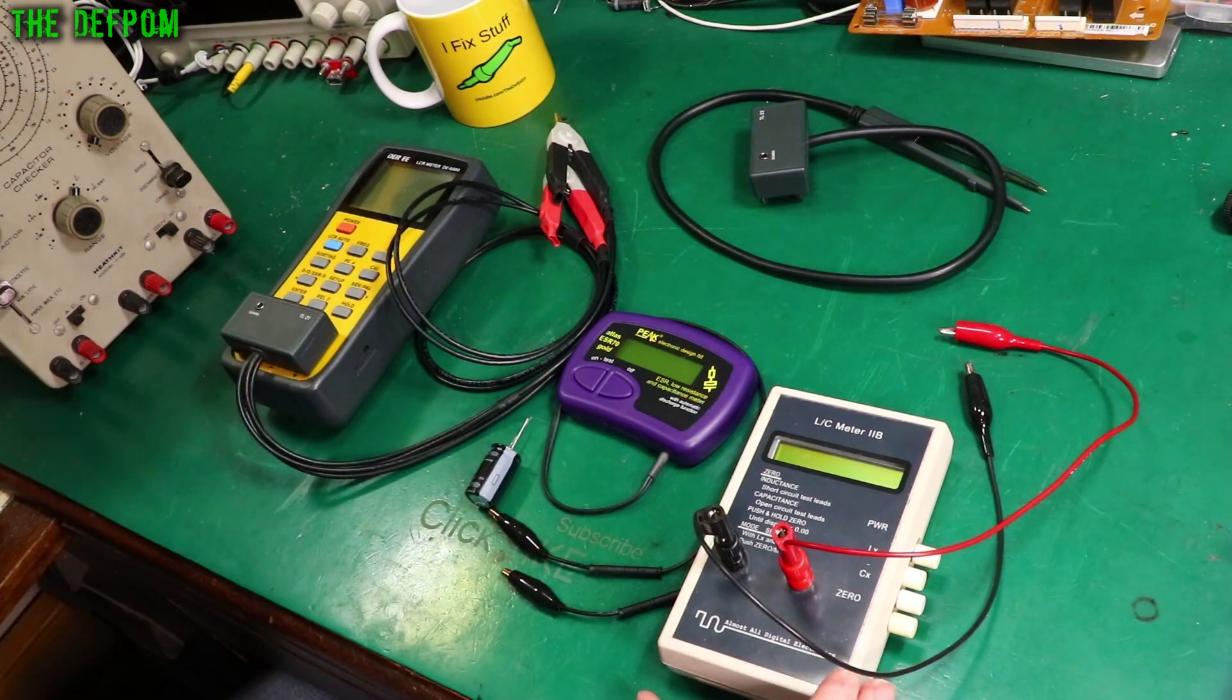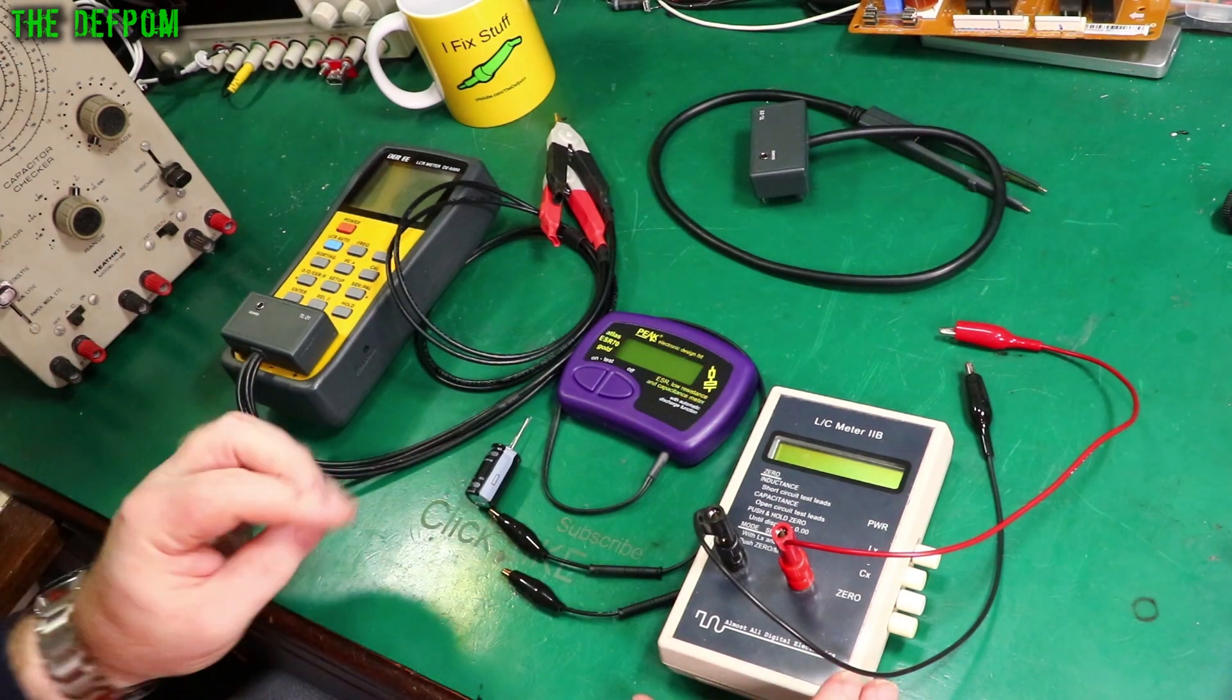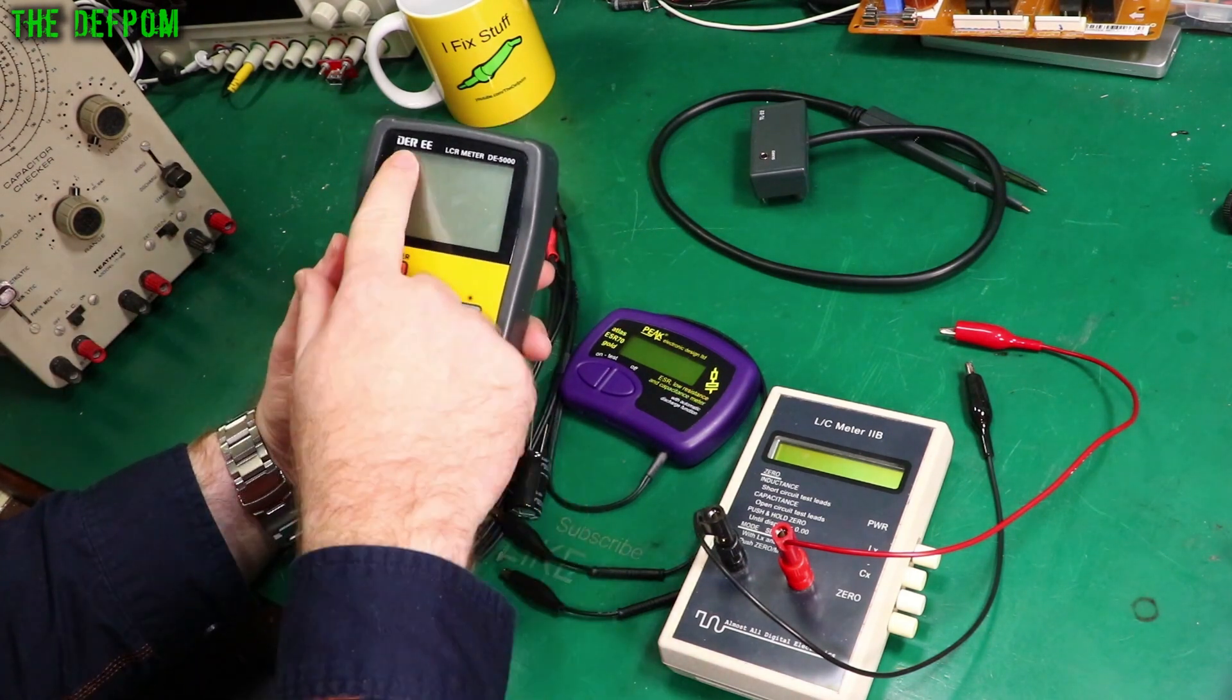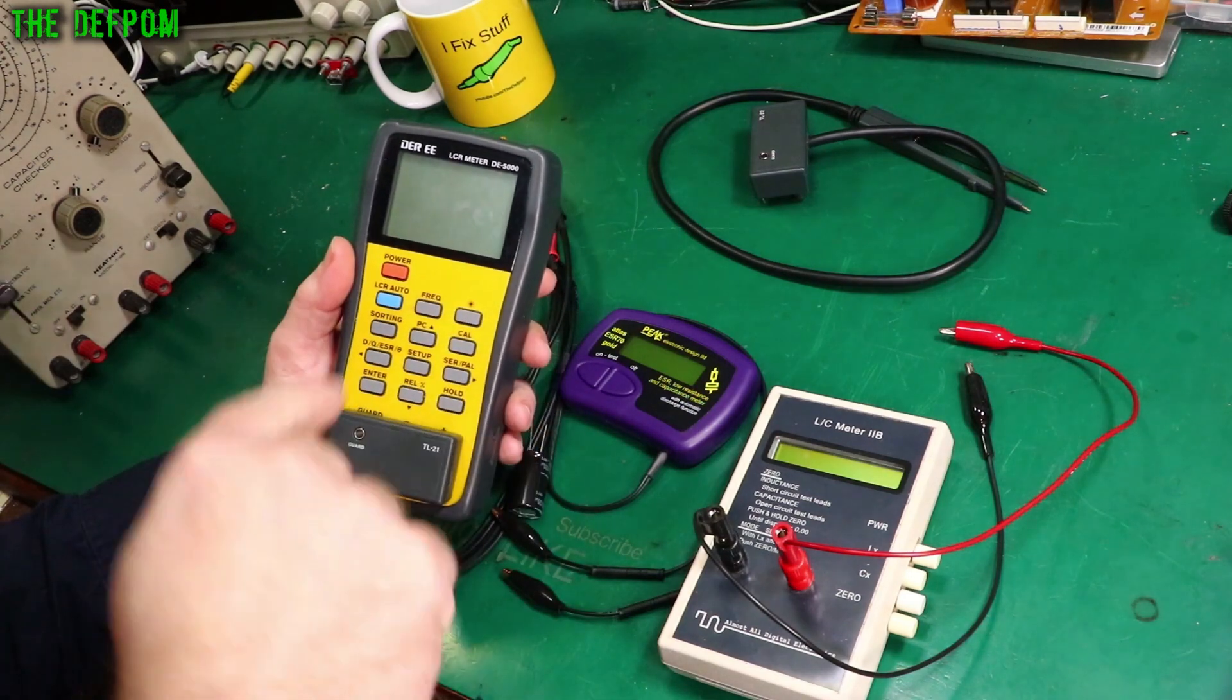I've got a selection here, just a few of the ones I've got. I've got a couple more laying around the place, but I'll start with this one. This is a really common meter. A lot of people use these. You can get these really easily. It's a DER DE5000. I've put some links down below for these if you're interested in looking at these things.